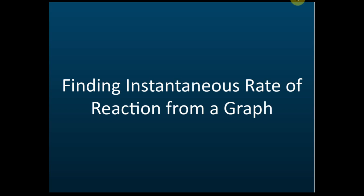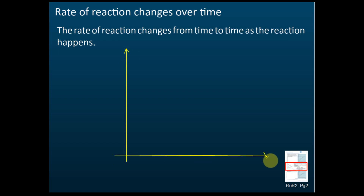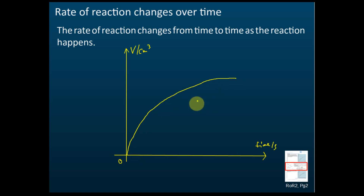Let's proceed to finding instantaneous rate of reaction from a graph. The rate of reaction changes over time — we've learned that the rate of reactions decreases over time. Let me draw the graph. This is the volume of gas in cm³ and this is time in seconds. This is a graph of products against time.